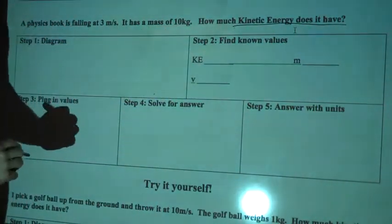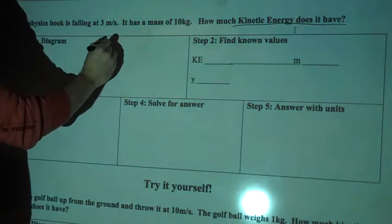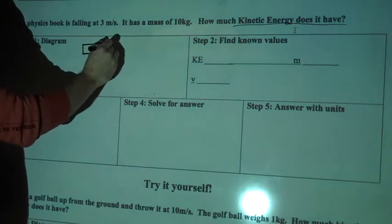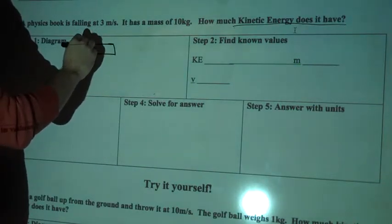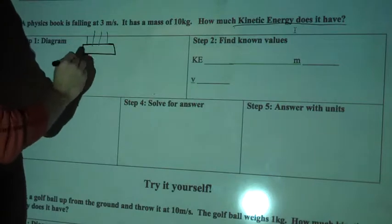So we'll draw a diagram first. We'll have our physics book, go ahead and do this on your own paper while I'm doing it up here. And it's falling, going this way.